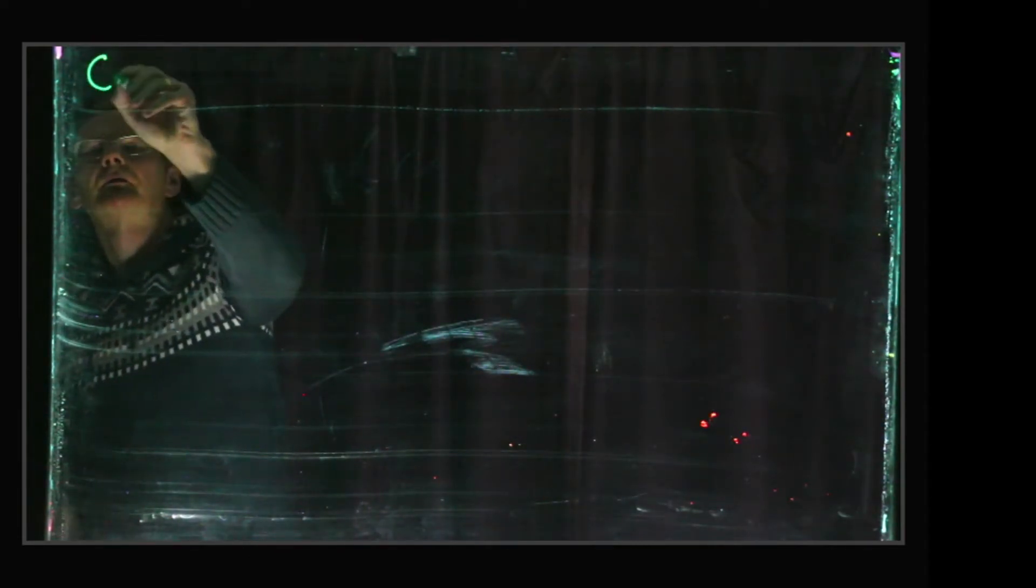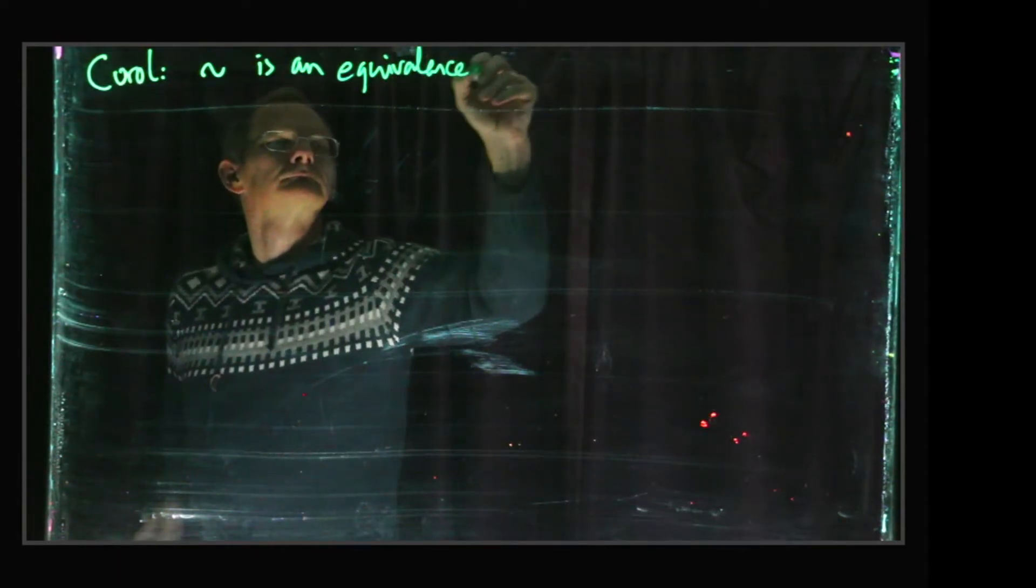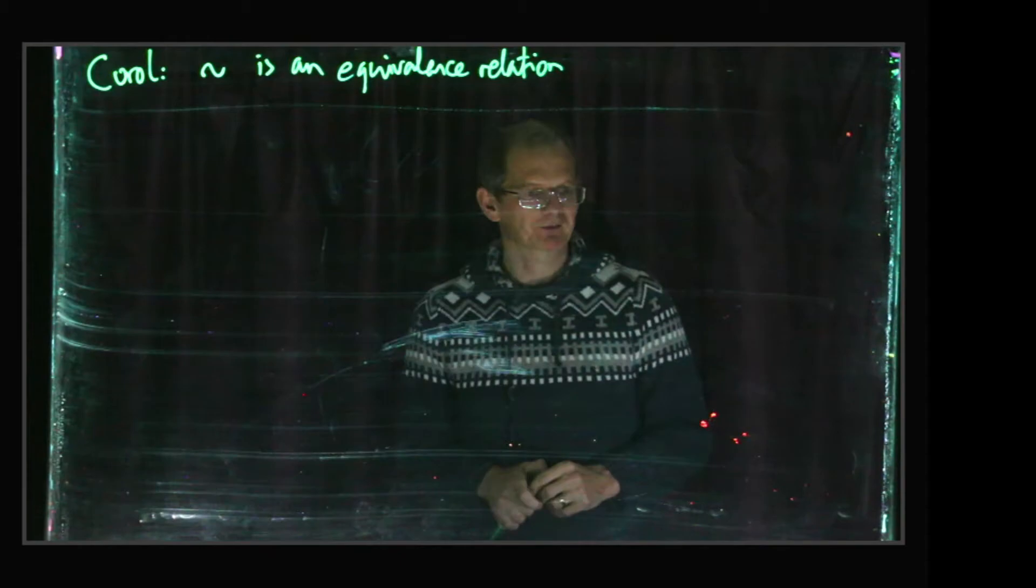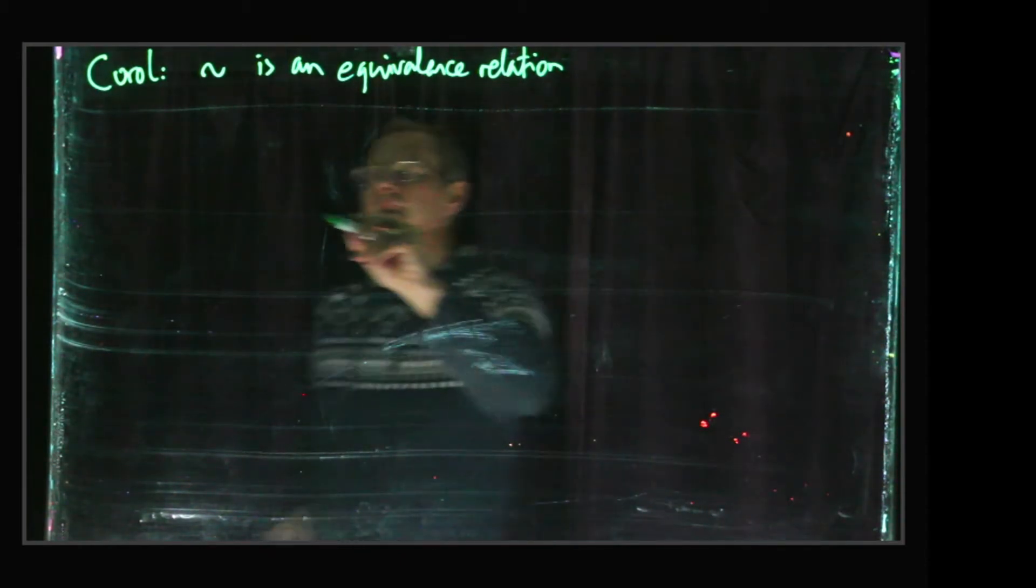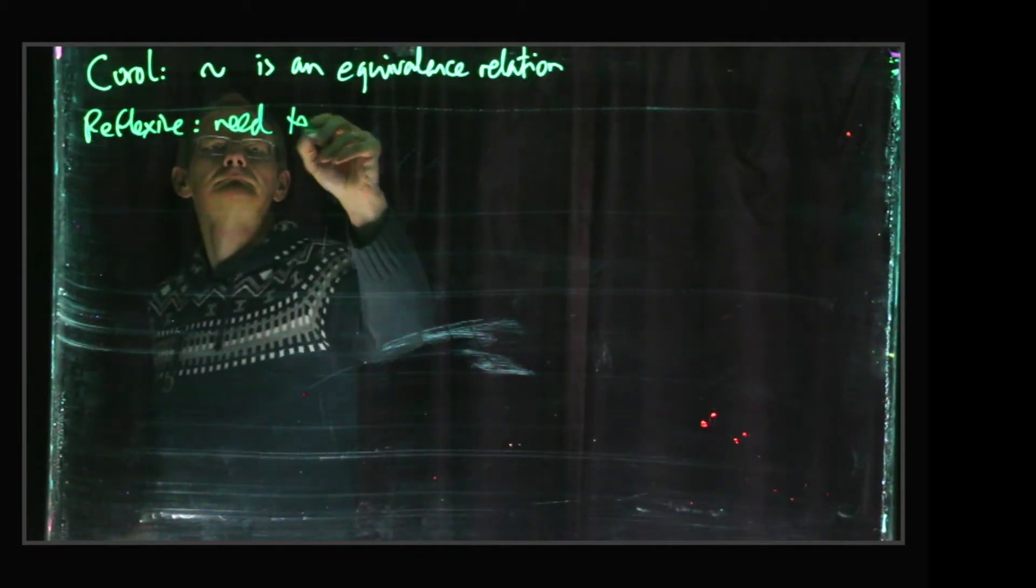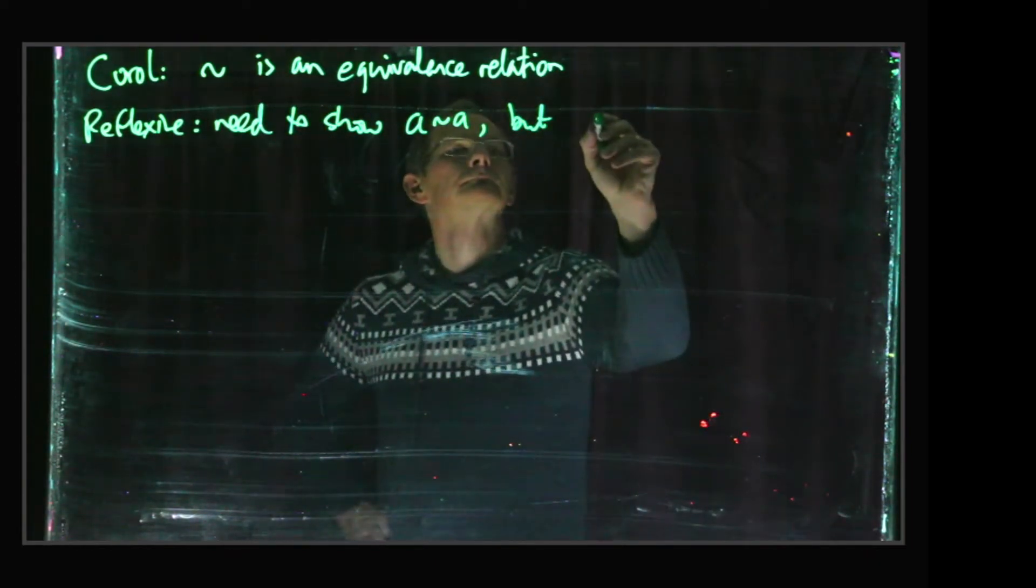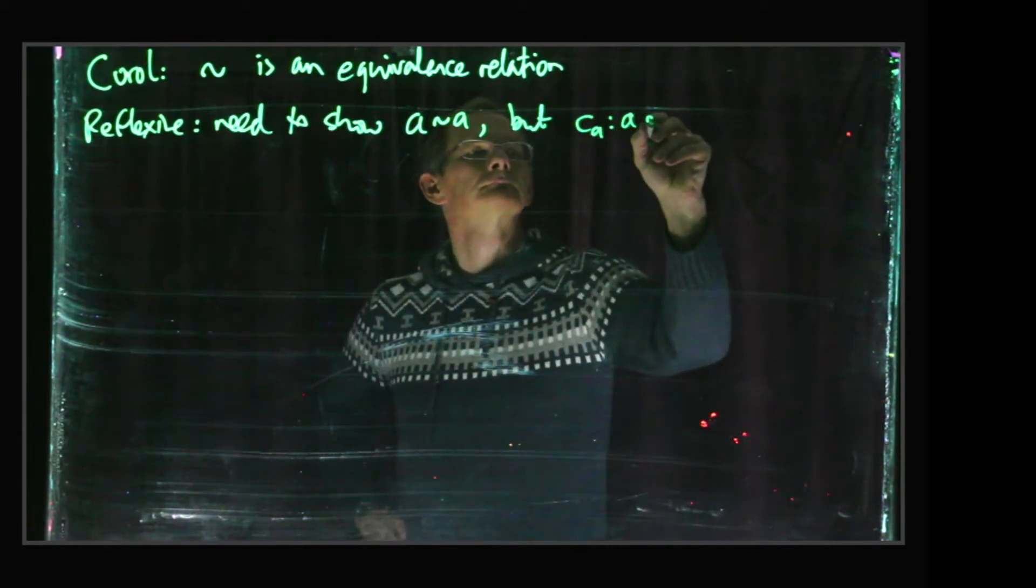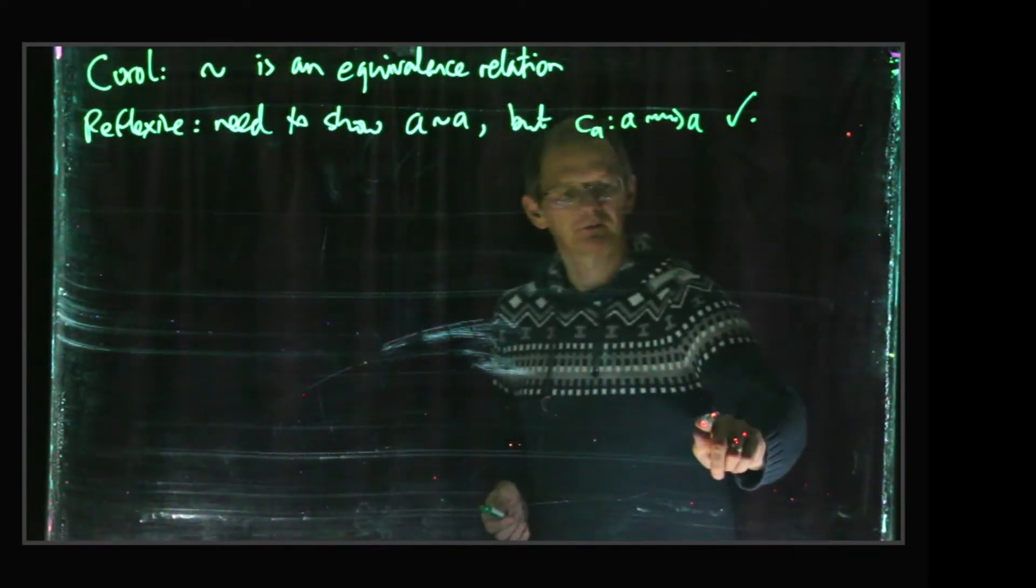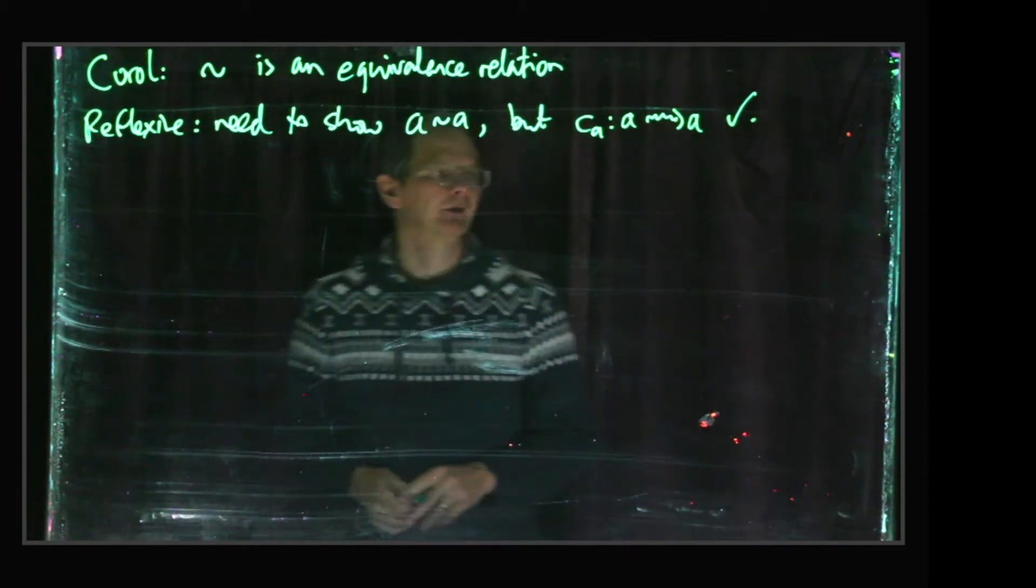So an immediate corollary is that this relation that we introduced is an equivalence relation. Remember what that means? It means it's reflexive, symmetric and transitive. Okay, so we need to show that A is related to A according to this relation. And the relation, the definition of the relation is that A is related to B if there exists a path from A to B, and the constant path goes from A to A, so that does it.